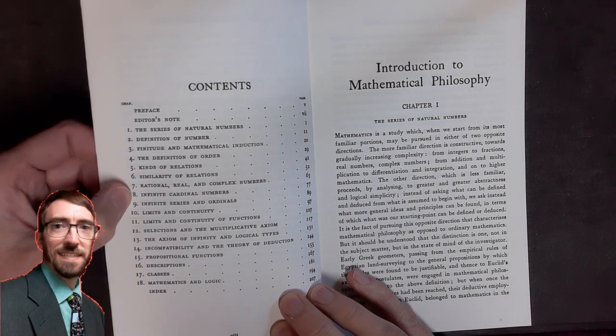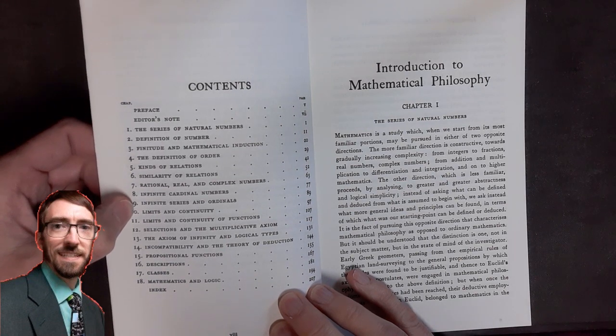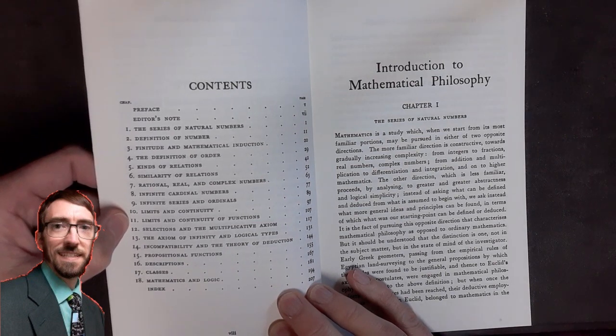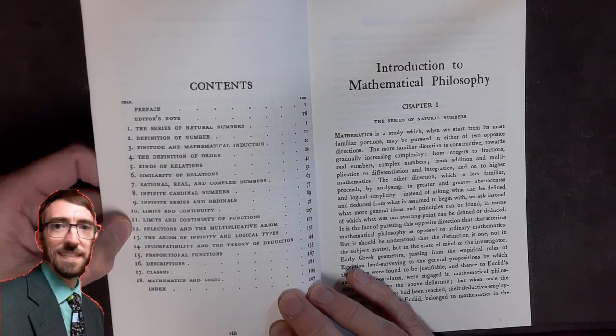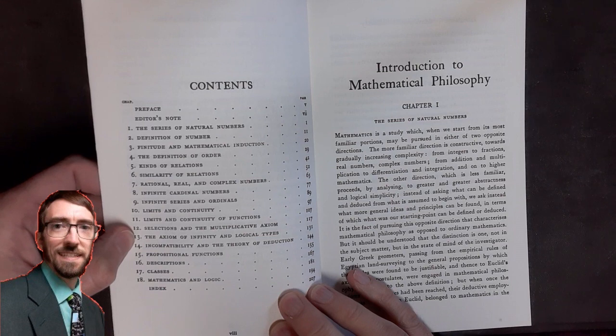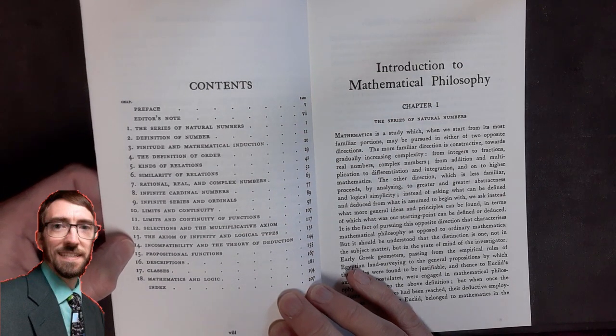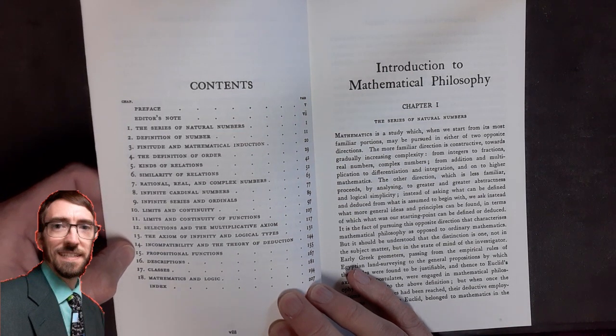Eight is infinite cardinal numbers. Nine is infinite series and ordinals. Ten is limits and continuity. Eleven is limits and continuity of functions. Twelve is selections in the multiplicative axiom. 13, the axiom of infinity and logical types. Chapter 14, incompatibility and the theory of deduction. 15, propositional functions.